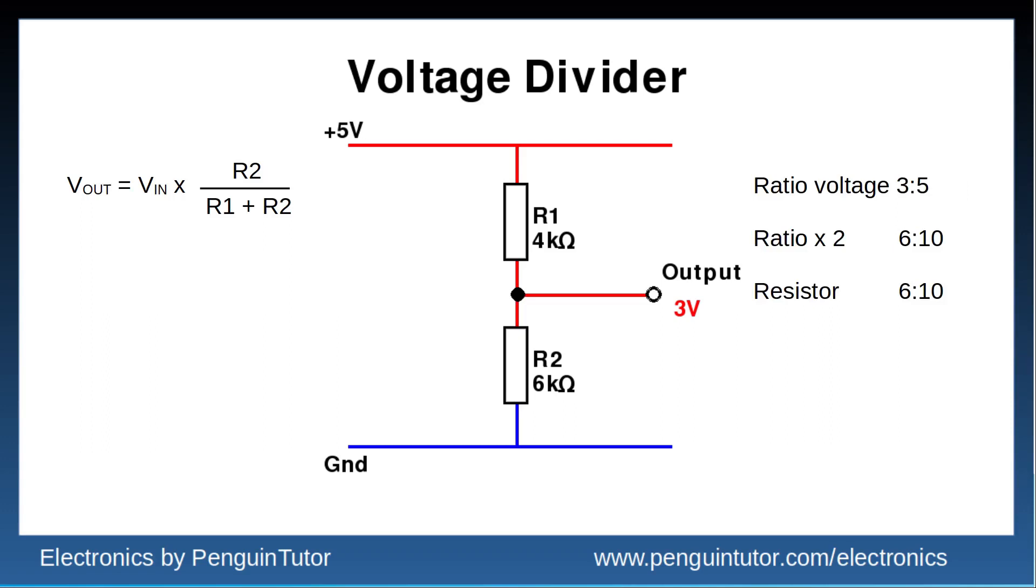But for these values, I used an easier way. Think of the voltage divider in terms of ratios. We need a ratio of 3 volts to 5 volts for the output to the input. So we need to implement that ratio across the two resistors.